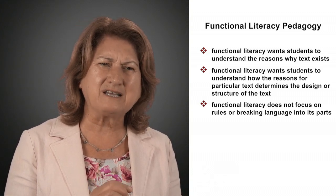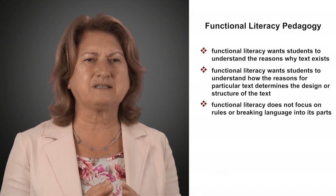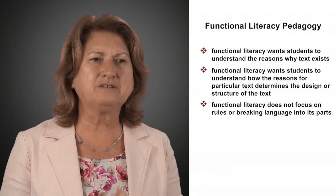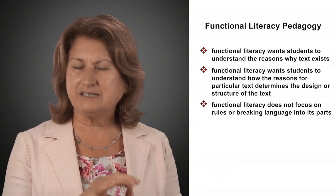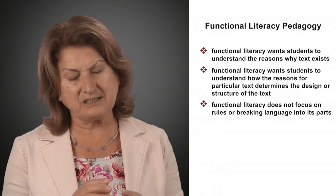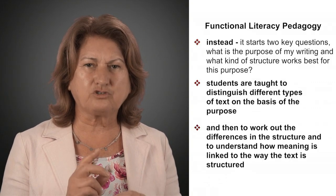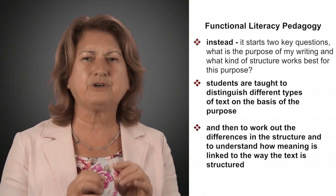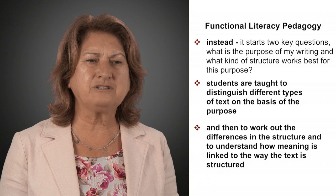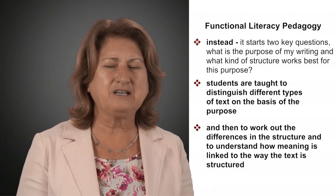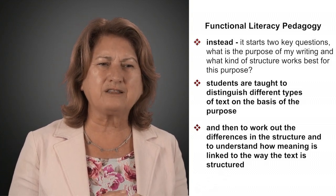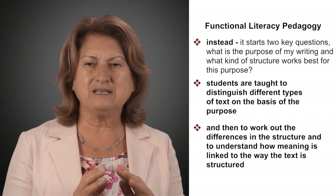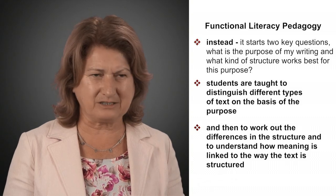Functional literacy wants students to understand how the reasons for making particular texts shapes and determines the design and structure of the text. Unlike didactic approaches, it doesn't focus on rules or breaking language down into its parts. Instead, it starts with two key questions: What is the purpose of my writing? And what kind of structure works best for that purpose? Students are thus taught to distinguish different types of texts on the basis of purpose, and then to work out the differences in structure and understand how meaning is linked to the way the text is structured.